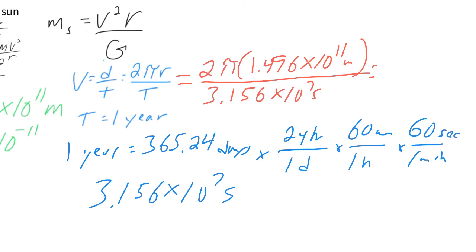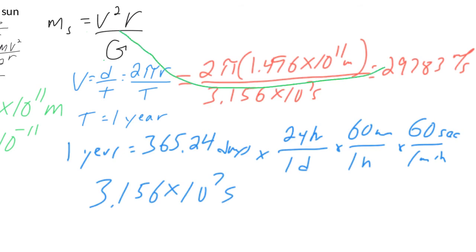We calculate that out and we get basically about 30,000 meters per second. Let me see what I get exactly: 29,783 meters per second. So that is very fast, by the way. That's about 65,000 miles an hour. So think about that as you're sitting back in your chair right now. The last thing we're going to do is plug that velocity in here.